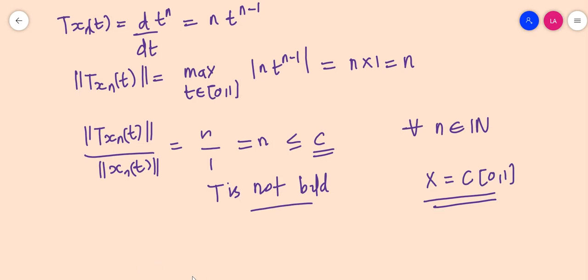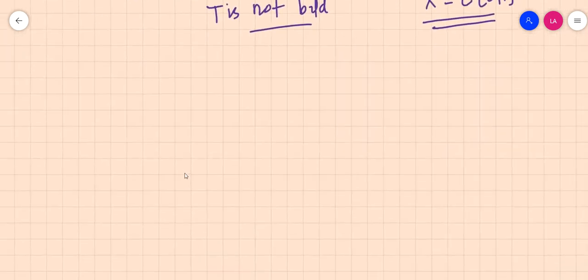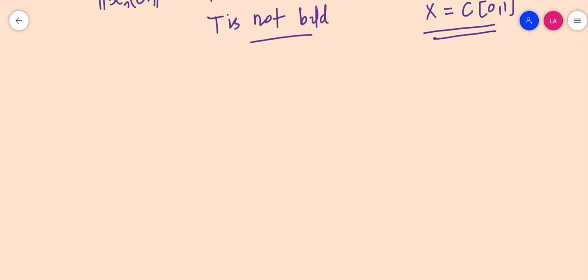So we have given an example of bounded operators and an operator which is not bounded. Let's move on to one more operator — the integral operator — as Example 4.